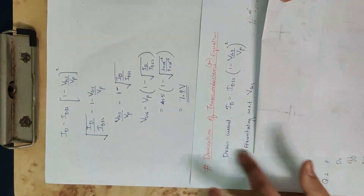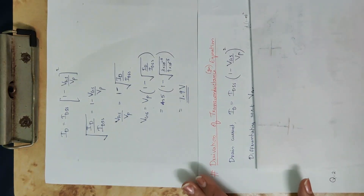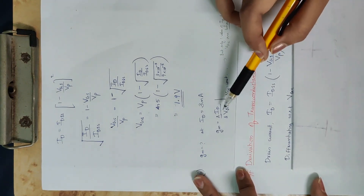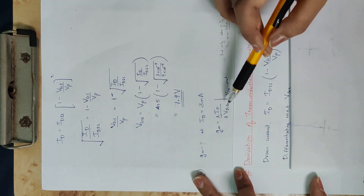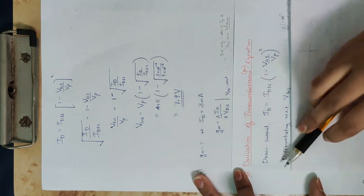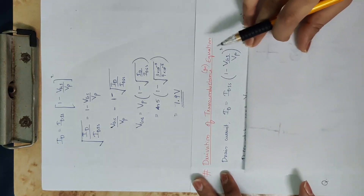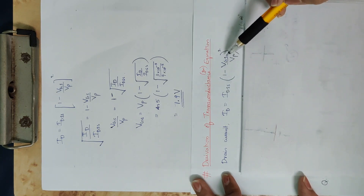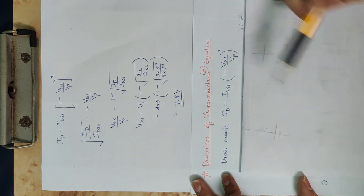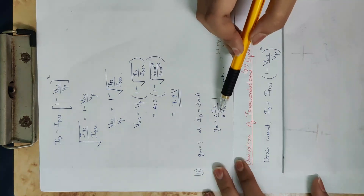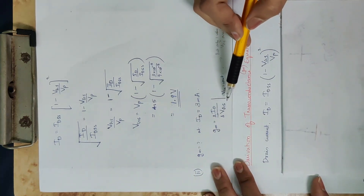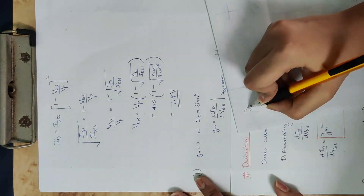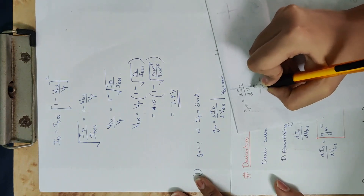To solve this, we derive the transconductance equation by differentiating the drain current equation. So gm = d(ID)/d(VGS), and we differentiate ID = IDSS × (1 − VGS/VP)² with respect to VGS.